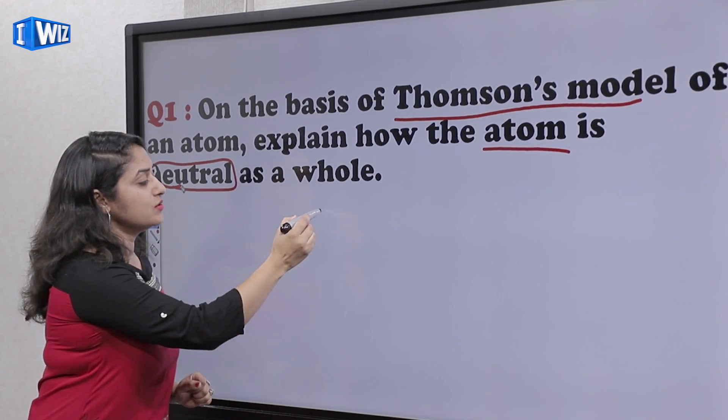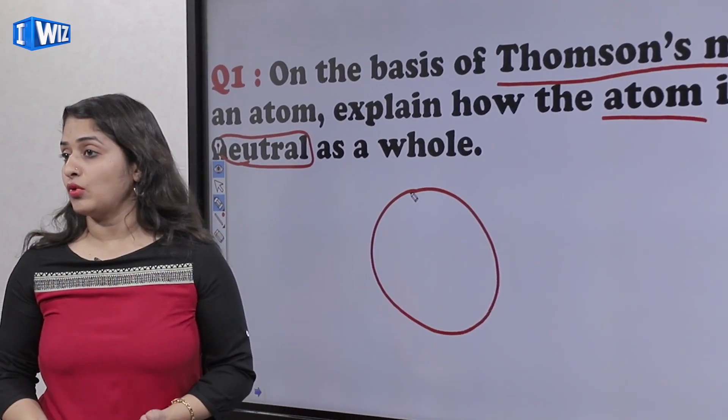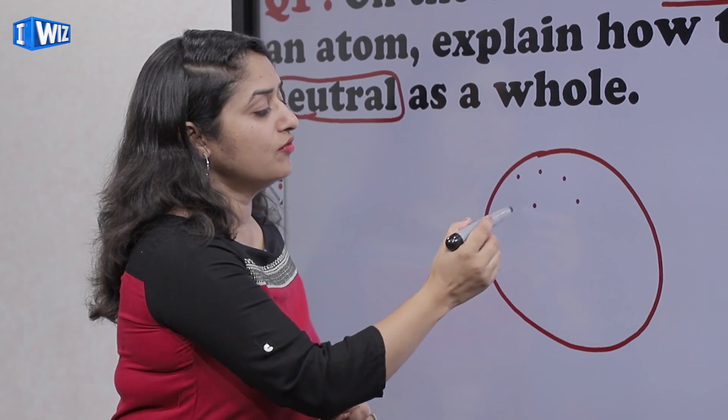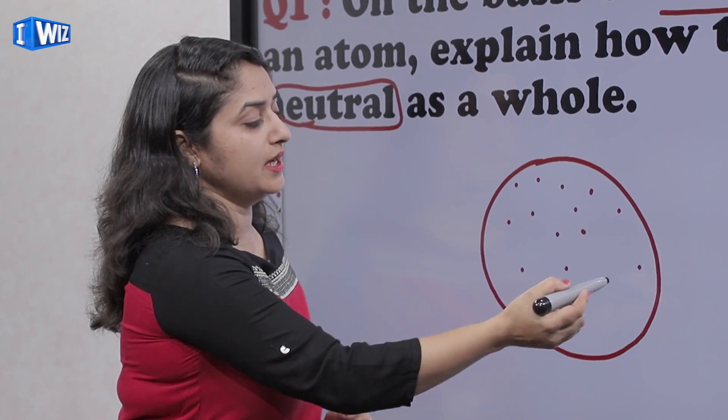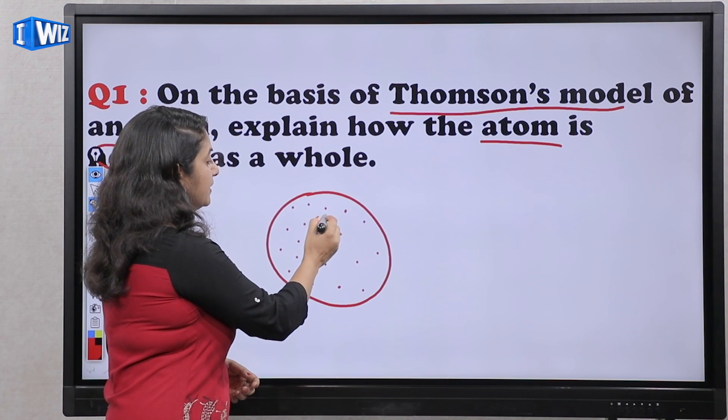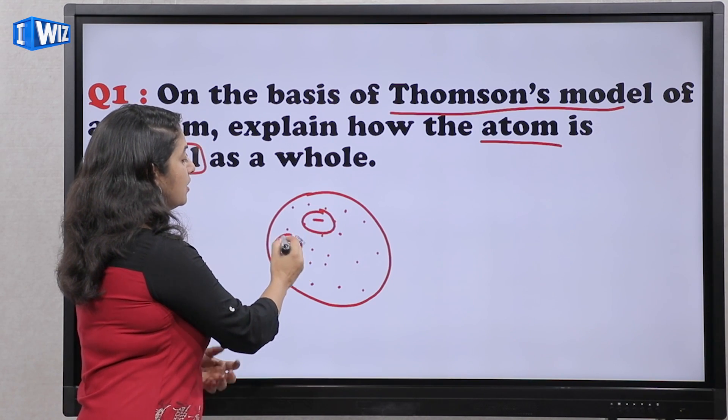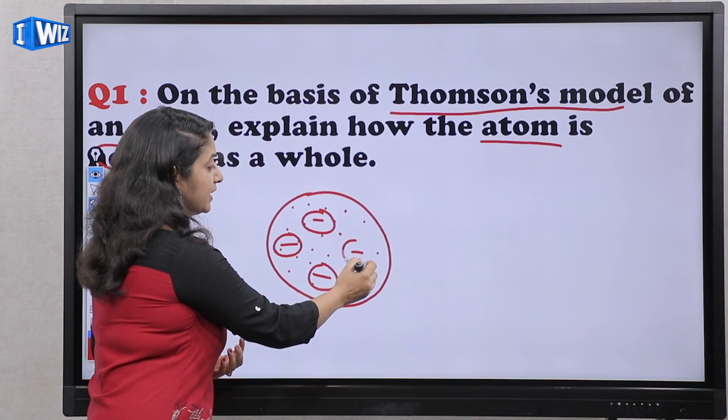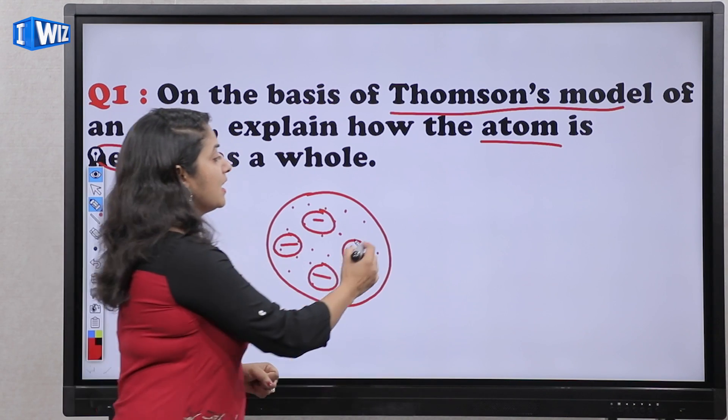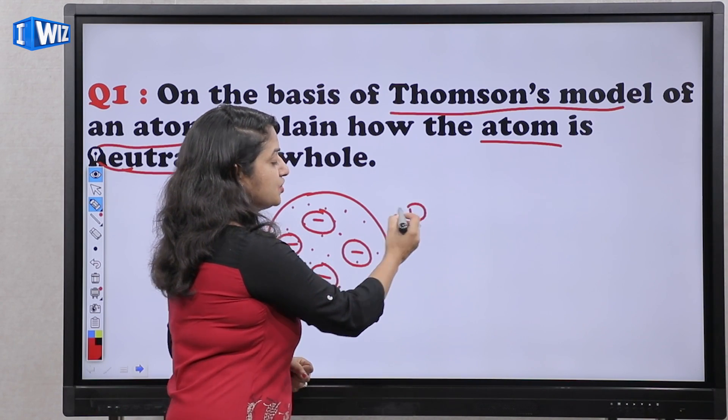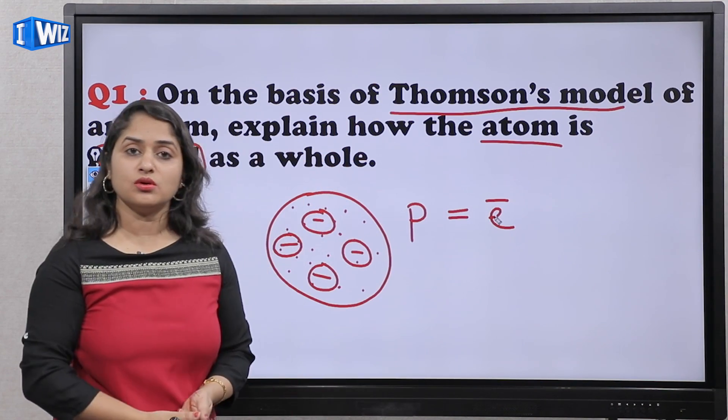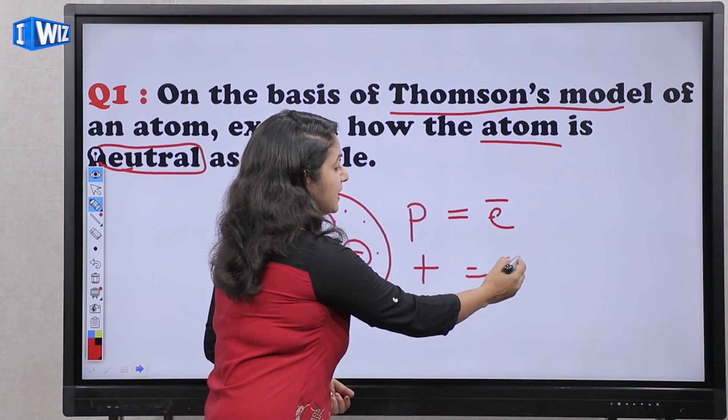Now when we have done the model, watermelon model, plum pudding model, Thomson said that the positive charge is uniformly distributed and the negative charge is embedded. Just like watermelon seeds or pudding. If you have the positive charge, the negative charge will be neutral. Because positive and negative charges will cancel.